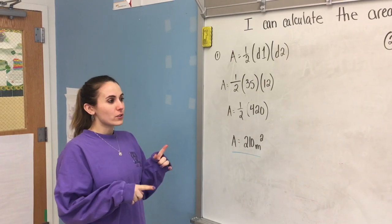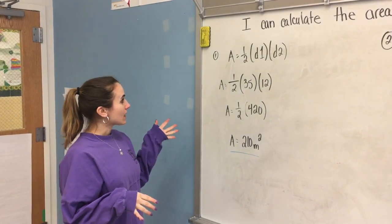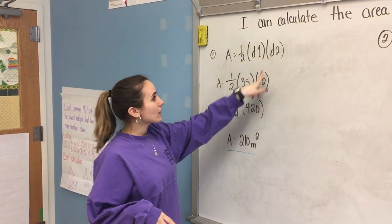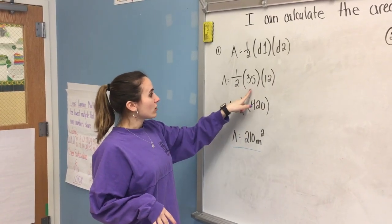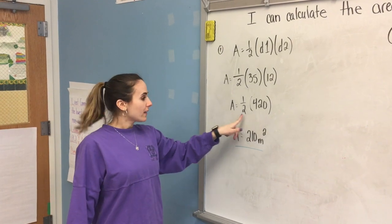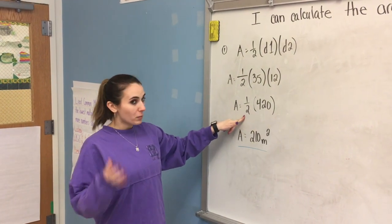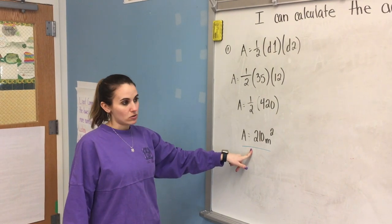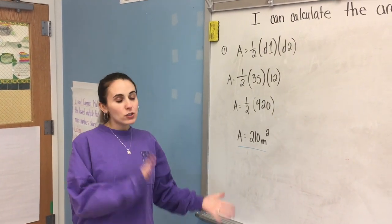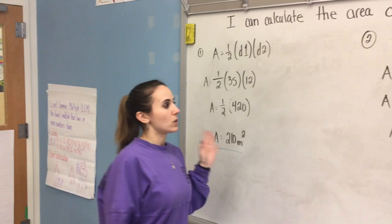So now that you did all of your independent practice, here's number 1's answer. Mr. Mironi plugged straight into his diagonals. He had half of 35 and 12. He did 35 times 12 first, got 420. Then he divided that by half or by 2, same thing. And he got his area to be 210 meters squared. Now once again, just like trapezoids, you could do it a little differently. But let's go on to number 2.